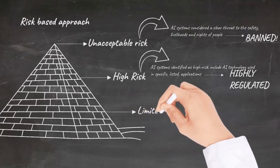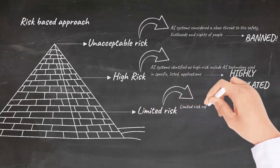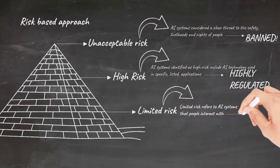Limited risk systems refers to AI systems that people interact with. These systems will have to make users aware that they are interacting with a machine.